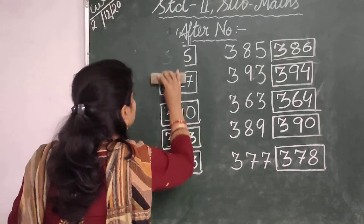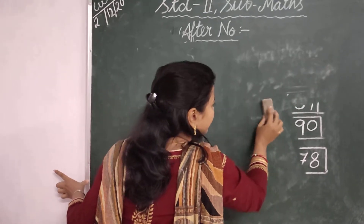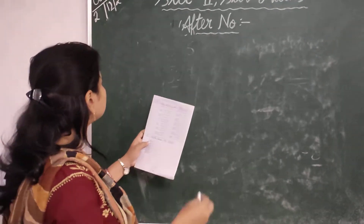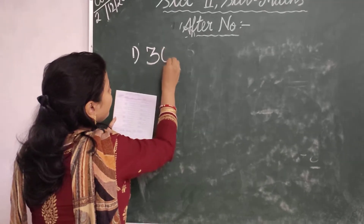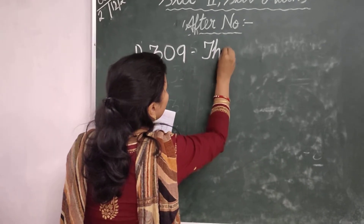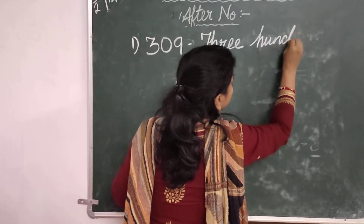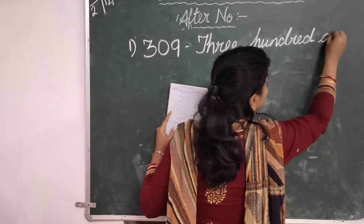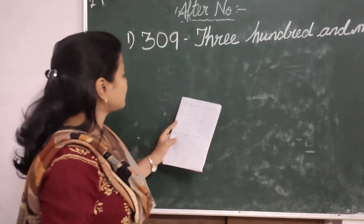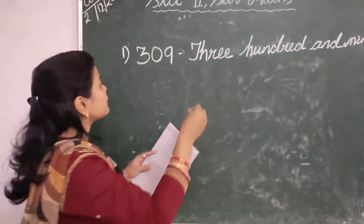Next we will do number names. Some number names. Your first number is 309. Here children, number names.